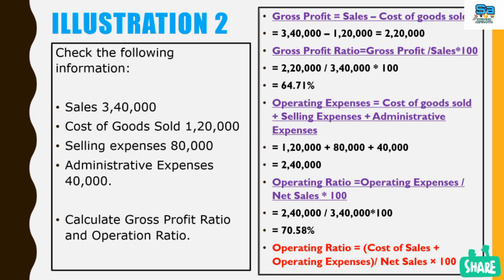Now we apply the operating ratio formula: operating ratio equals operating expense divided by net sales, multiplied by 100. Operating expense 2,40,000 divided by net sales 3,40,000, multiplied by 100, gives 70.58% as the operating ratio.